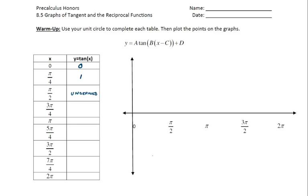Continuing through the table: tangent of three pi over four would be negative one, at pi would be zero, at five pi over four would be one, and then at three pi over two would be undefined again because cosine at three pi over two is zero. Cosine is in the denominator of tangent, so tangent is undefined there. And then the last two points follow accordingly.